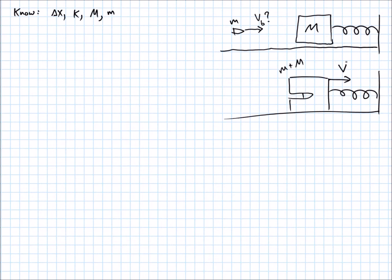So this is my before and after collision picture. If I knew this V that they were moving together with, then I could use the conservation of momentum to get this initial velocity of the bullet. I don't know this velocity V that they're both moving at, though.